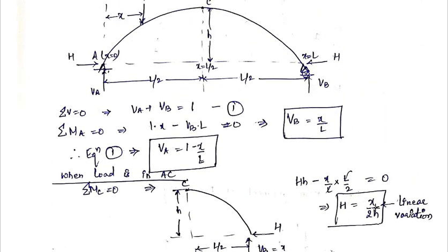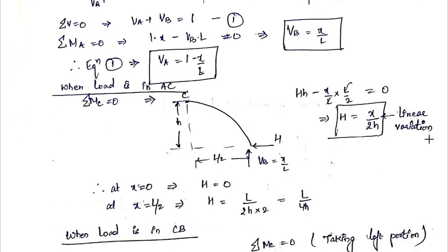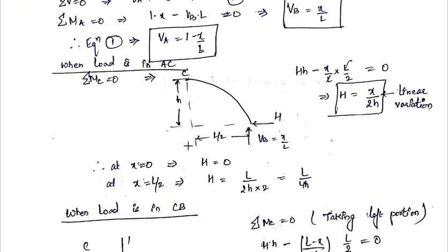This equation H = x/2h is for the AC portion. At A, x equals 0, so H equals 0. At C, x equals L/2, so H equals L/4h. These are the values of the horizontal thrust when the unit load is in part AC.